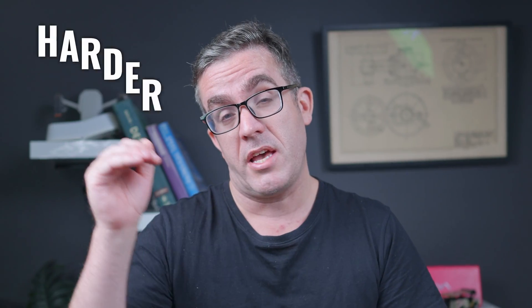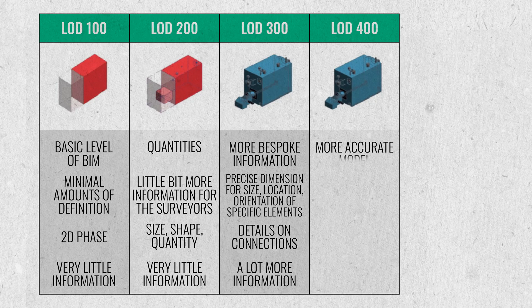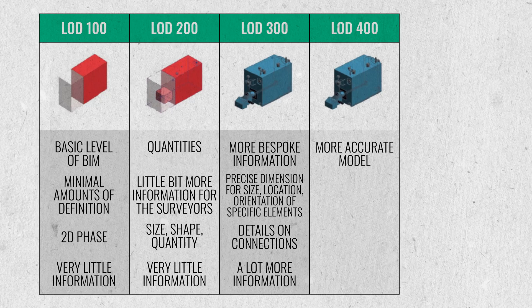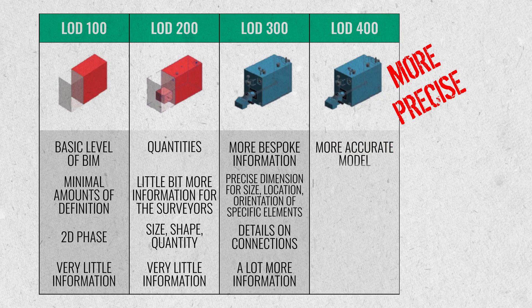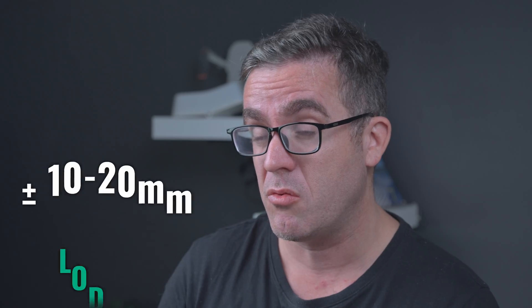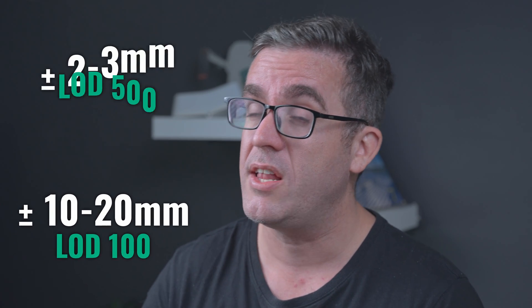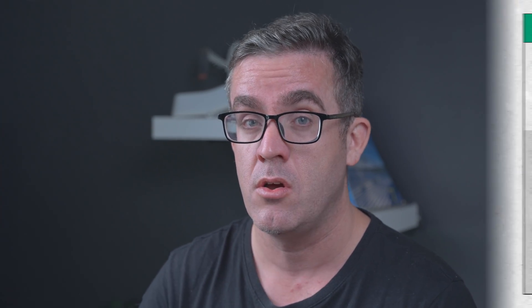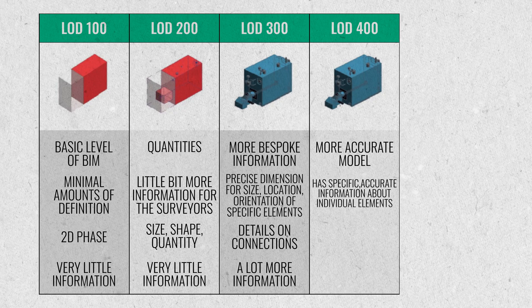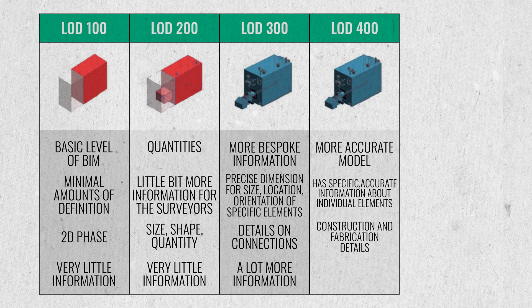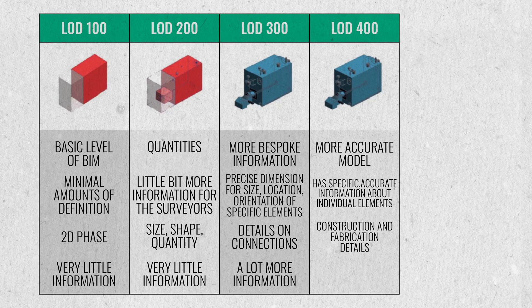As you go up through these stages, they become exponentially harder to do as you need more and more information in your model. LOD 400 is really where a lot more information enters the model, making it more complex and precise. Where LOD 100 could be plus or minus 20 millimetres, here you're really getting down to plus or minus a couple of millimetres to accurately detect any errors or clashes. It has specific, accurate information about individual elements — going into the connections, finishes, fabrication methods, and potentially even the erection methods, including how parts come to site, how they're erected and fabricated, and even some temporary conditions.